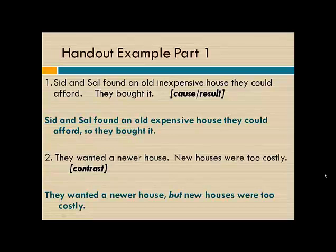Again, if you do not want to use the exact wording from the handout, please feel free to adapt it. For example, 'They wanted a newer house, but they were unable to afford one' would also be an acceptable sentence combining response. Just discuss with your students why you changed the second sentence when you combined the two sentences.